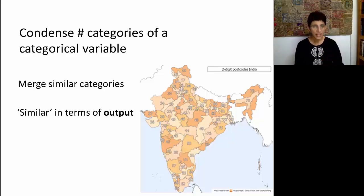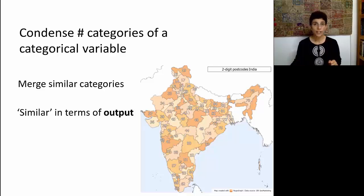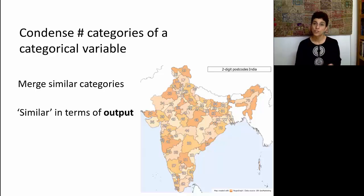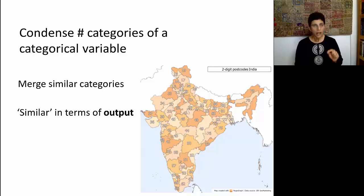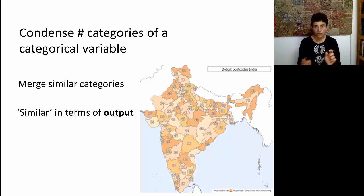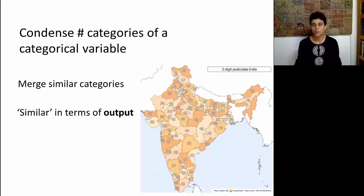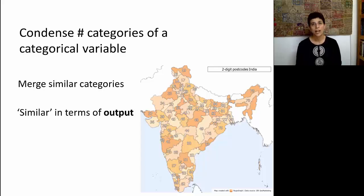How do we determine what is similar? That depends on the data mining task. If we're in a supervised learning task, where we have an output and a set of inputs, and one of our inputs is, say, postcode, then we're going to want to merge postal codes that are similar in terms of their output behavior — maybe that's the number of hours that people watch television, or the amount of sugar that people consume. We want to group together categories where people behave in the same way with respect to the output. A nice way to do that is to chart that output of interest for the different postal codes and find those that behave the same. If we're in an unsupervised learning technique, where we don't really care about inputs and outputs, then determining what is similar will have to bring in domain knowledge and maybe look at other variables.